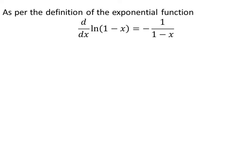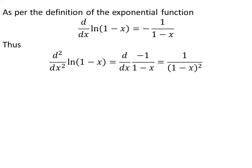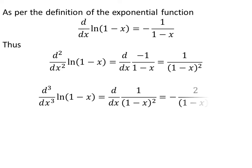We know the derivative of natural log of 1 minus x is equal to minus 1 upon (1 minus x), by application of the chain rule of differentiation. The second derivative of natural log of 1 minus x is equal to 1 upon (1 minus x) squared. The third derivative of natural log of 1 minus x is equal to minus 2 upon (1 minus x) cubed.